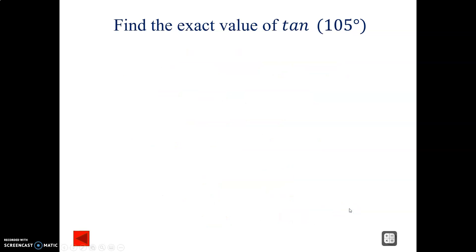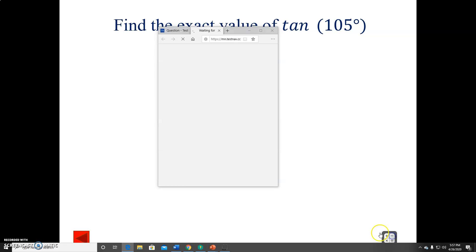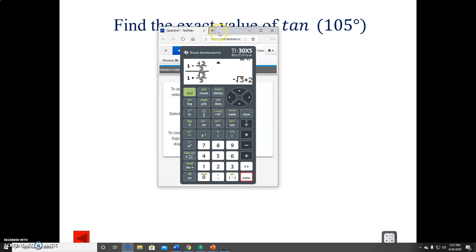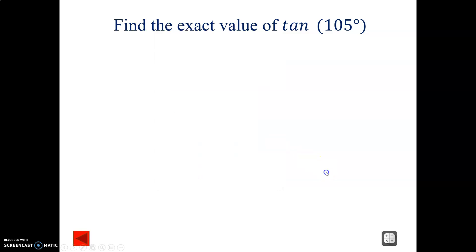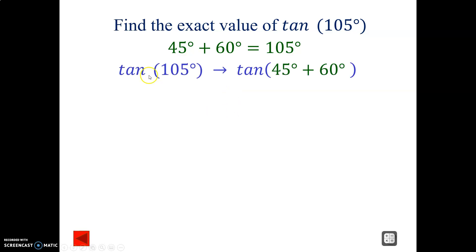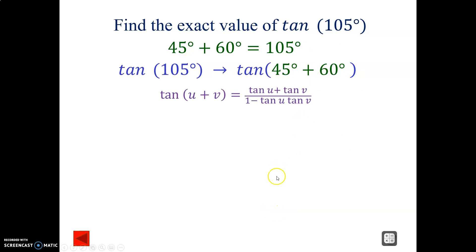Next problem: tangent 105 degrees. Using the 45 strategy, 105 minus 45 gives us 60. So 60 and 45 add up to be 105. Instead of tan 105, we write tan (45 plus 60). So we'll be using the addition identity.